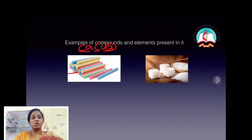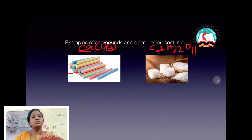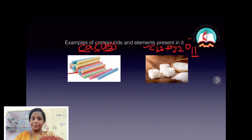The next example is sugar. Sugar is a compound made up of a combination of three elements: carbon, hydrogen, and oxygen — 12 atoms of carbon, 22 atoms of hydrogen, and 11 atoms of oxygen. They combine to form a compound called sugar.